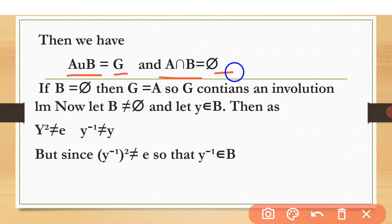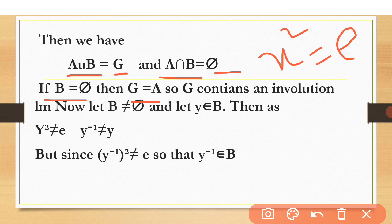A intersection B equals the empty set, meaning these two sets are disjoint — no element appears in both A and B. If B is empty, then G equals A entirely, and since A contains involution elements where x²=e, that means G contains an involution.